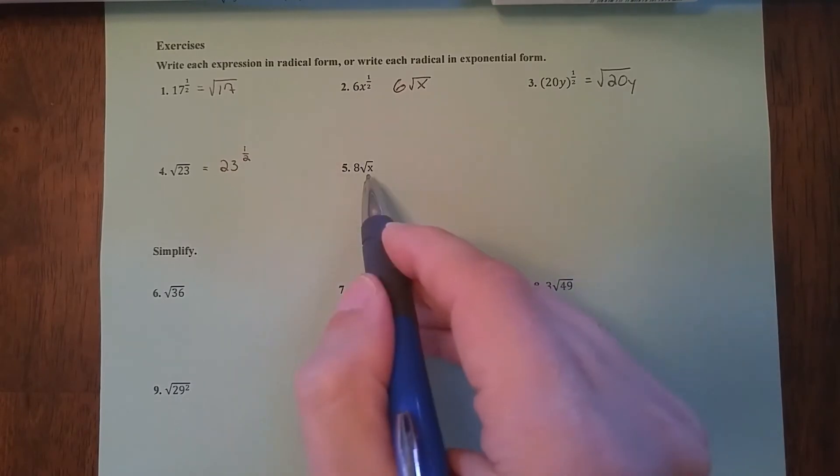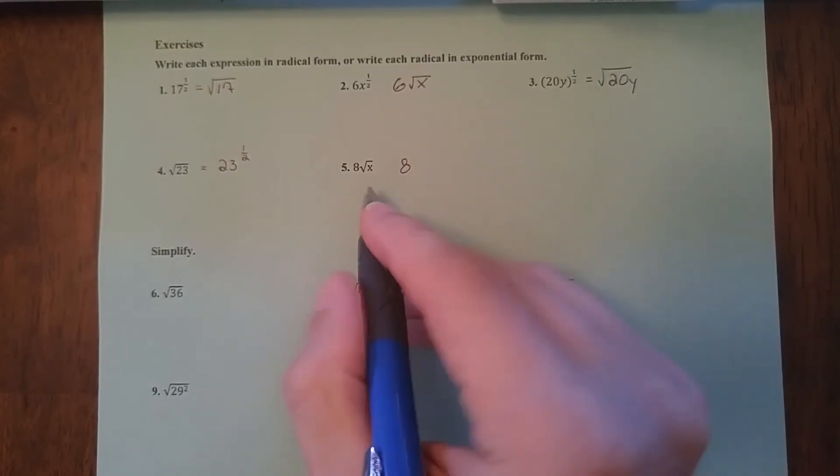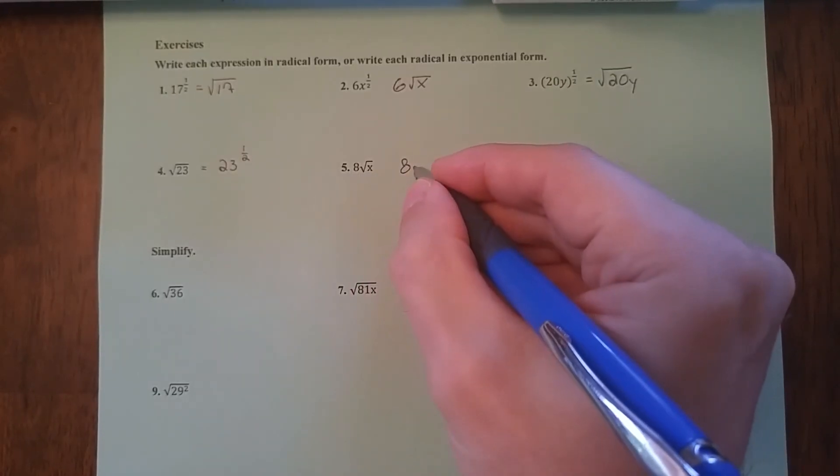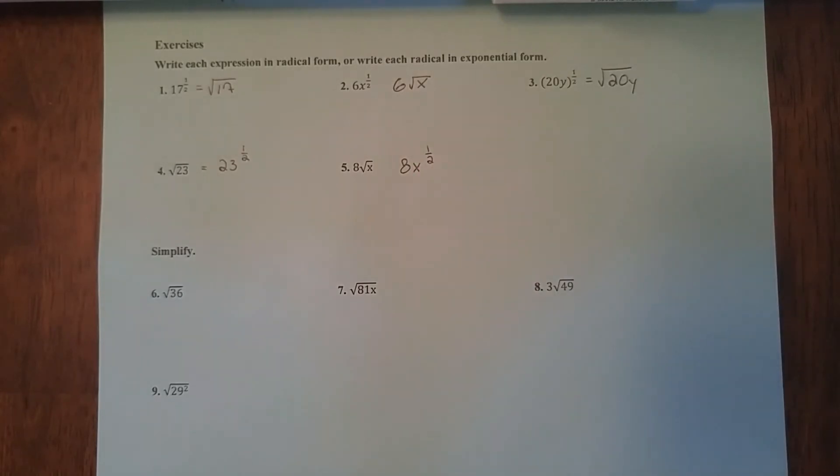So this one right here is kind of like the opposite of this. So this 8 is just hanging out outside, not in the radical, but the x is under the radical. So we're going to put this x here, and the x is to the one-half. All right, hopefully that makes more sense now.